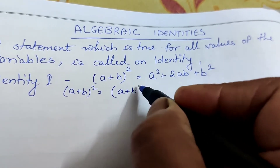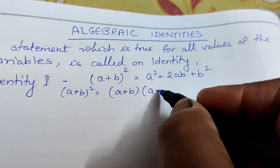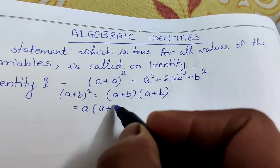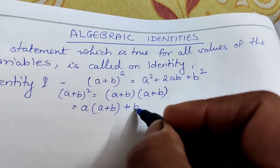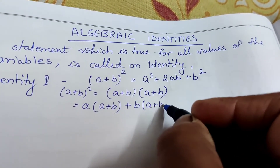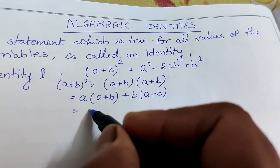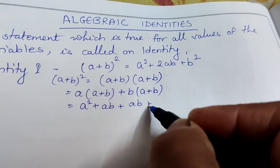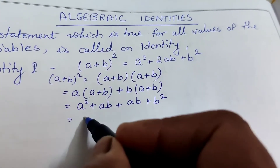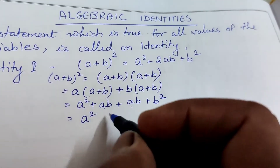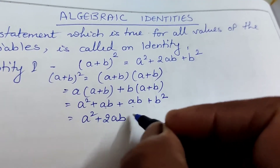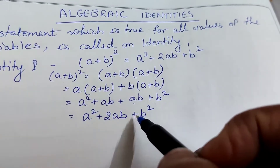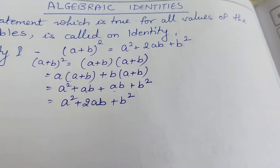Since (a + b) is a binomial, we multiply it binomial by binomial: a multiplied to (a + b), and b multiplied to (a + b). You get a² + ab + ab + b². The like terms ab and ab add to give 2ab, so the result is a² + 2ab + b².